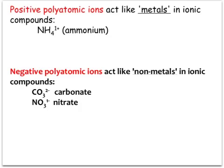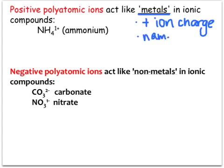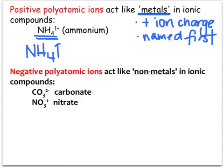Let's look at how these polyatomic ions fit into ionic compounds. Positive polyatomic ions act like metals. Metals in ionic compounds all have a positive ion charge and are named first when naming an ionic compound. Our only positive polyatomic ion is ammonium, and here's an example of what it would look like bonded in an ionic compound with a nonmetal — we would call this ammonium bromide.